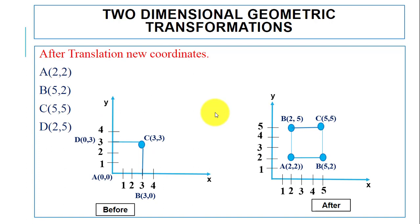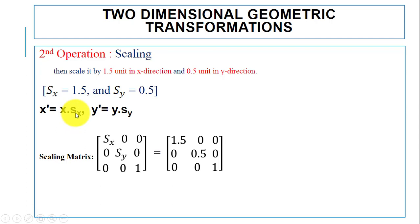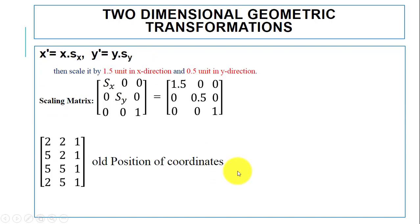Now we are going to perform the scaling operation on the translated coordinates. We have sx = 1.5 in the x-direction and sy = 0.5 in the y-direction. The new position is computed using: old coordinates multiplied by the scaling matrix. The scaling matrix has sx = 1.5 and sy = 0.5. We multiply the scaling matrix with the old positions — which are the coordinates obtained after translation.